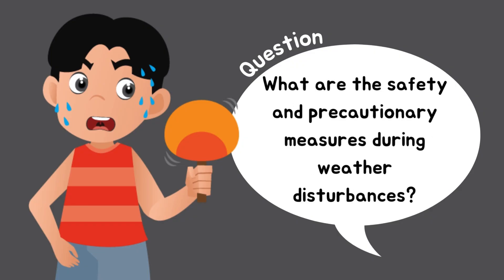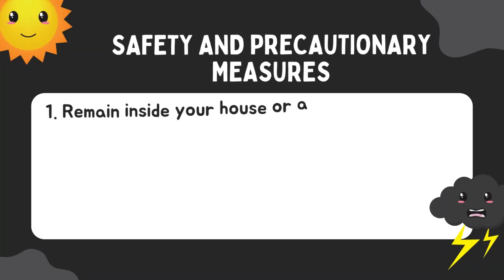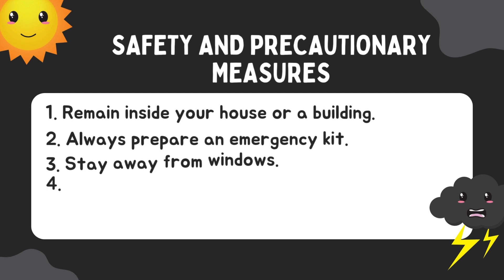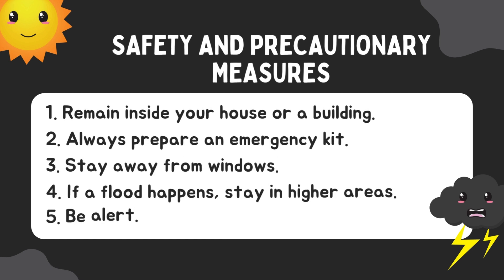What are the safety and precautionary measures during weather disturbances? Weather disturbances can be threatening. They can produce heavy rain, strong winds, and lightning. This is why you and your family must have a plan to keep safe. Here are some measures that will help you during a weather disturbance: 1. Remain inside your house or a building. 2. Always prepare an emergency kit. 3. Stay away from windows. 4. If a flood happens, stay in higher areas. 5. Be alert.